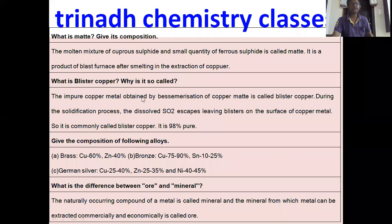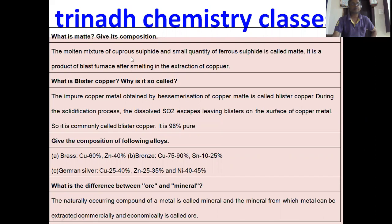What is matte? Give its composition. This is from general principles of metallurgy. The molten mixture of cuprous sulfide and a small quantity of ferrous sulfide is called matte. It is a product of the blast furnace after smelting in the extraction of copper. What is blister copper and why is it so called? The impure copper metal obtained by desulfurization of copper matte is called blister copper. During solidification, dissolved SO2 gas escapes leaving blisters on the surface; it is about 98% pure.